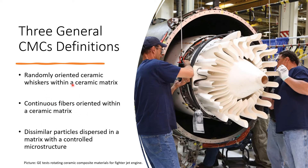Ceramic whiskers are randomly oriented inside of the matrix. You're going to see a matrix and we spike something into it — one of them is whiskers, the second is continuous fibers oriented within a ceramic matrix. So a composite has a matrix, and we spike in whiskers or fibers. Fibers come in two types: continuous and discontinuous.